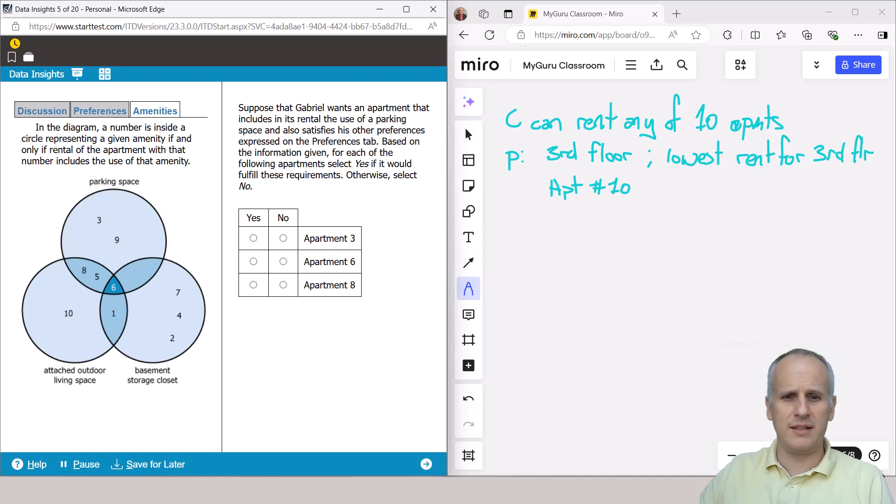So now we move on to the next and we see that we're being asked about Gabriel. So I'm going to just draw a little line here. I know what my notes were. So we've got G wants an apartment that includes in its rental the use of a parking space. So we've got to have a parking space, and also satisfies his other preferences on the preferences tab. So let's just go straight to the preferences tab.